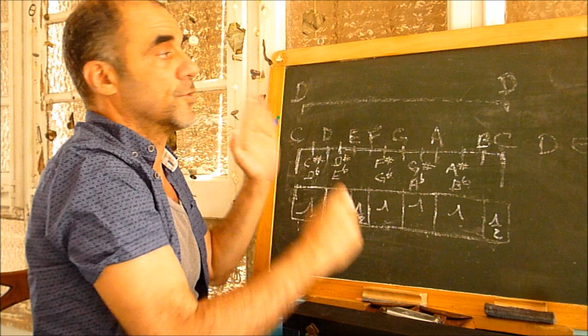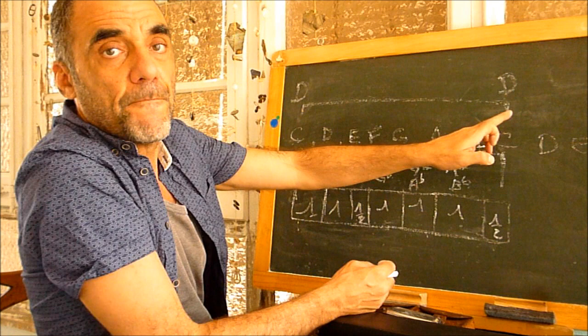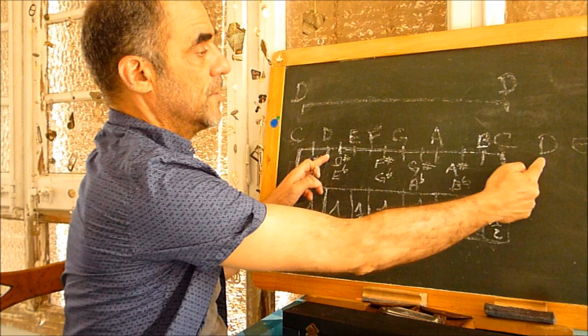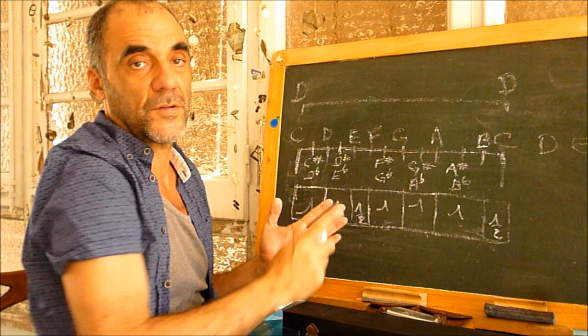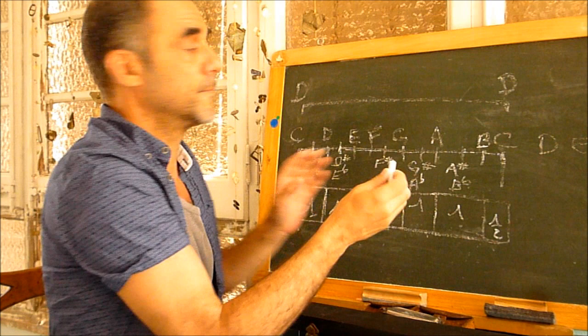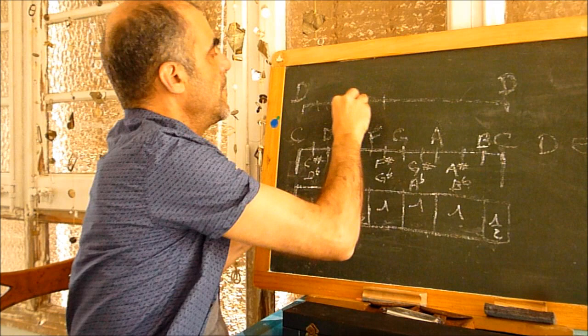From D to D, it's one octave. From one note to the next note of the same name, we double the frequency — that's one octave. From C to C is one octave, from D to D is one octave, from E to E is one octave — it's always like that. So we still have one octave, which means we have twelve half tones.